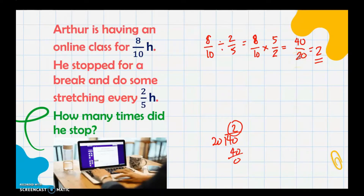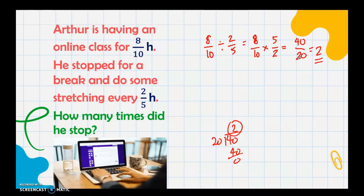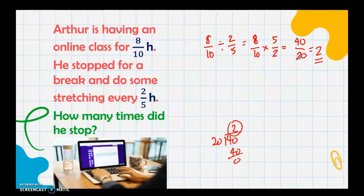Arthur stopped 2 times during his online class that day. When dividing, you need to be careful of the dividend and divisor because you cannot interchange them. The reciprocal is taken of the divisor only. If you interchange the divisor and dividend, the answer will be different, so be careful.